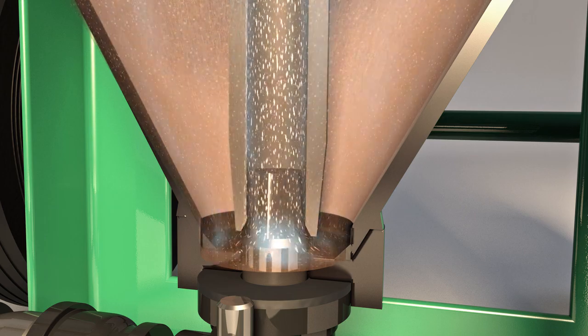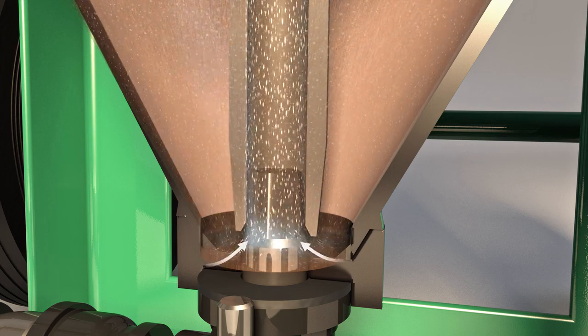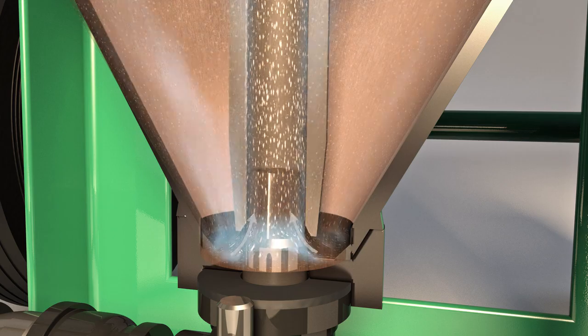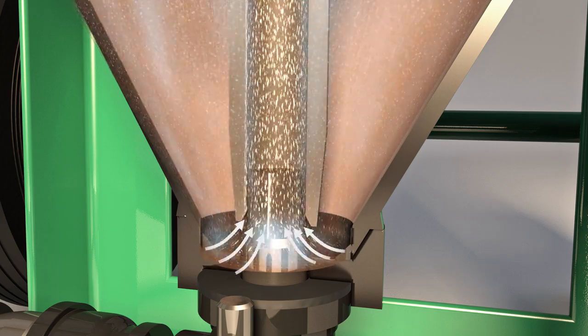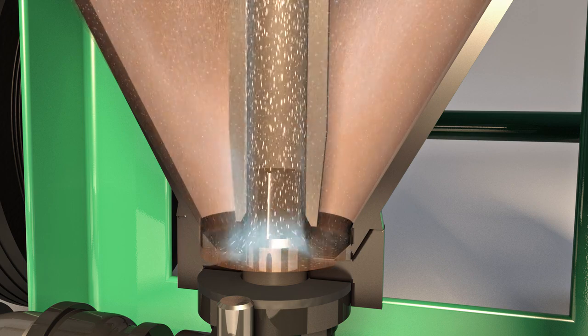This gap creates a venturi suction, which pulls water and media up into the outlet pipe and out of the machine. The bigger the gap between the outlet pipe and the air inlet jet, the more abrasive and water will be sucked up.